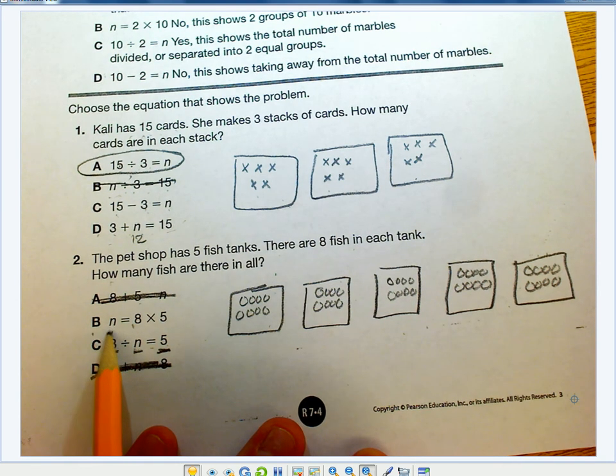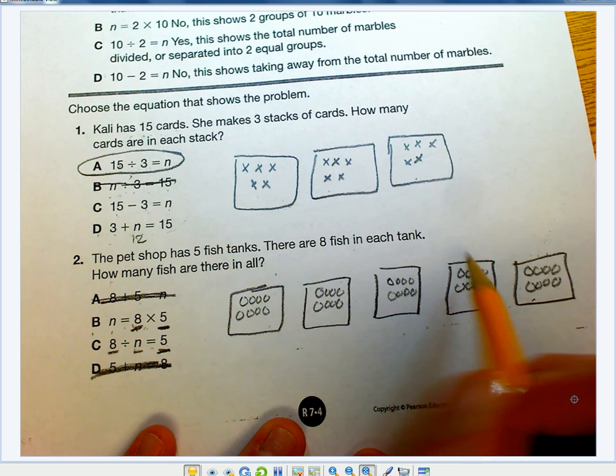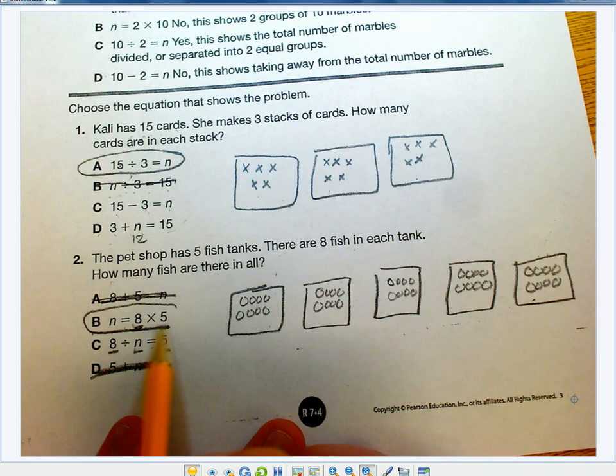And my unknown equals 8 fish times 5 tanks. So I have 8 groups of 5 or 5 groups of 8, depending on how you look at it. And I have 1, 2, 3, 4, 5 groups of 8, so B is definitely my answer.